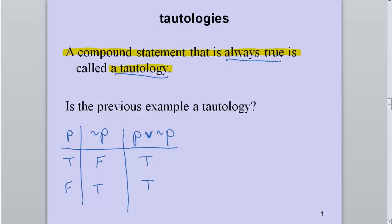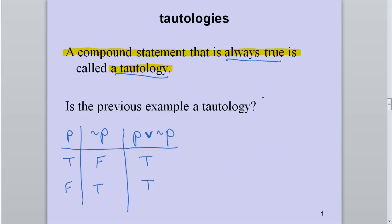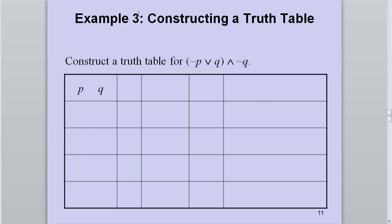Is the previous example a tautology? Let's look back — there is a false in the truth table, so no, it is not a tautology.